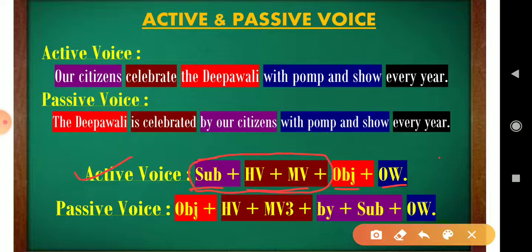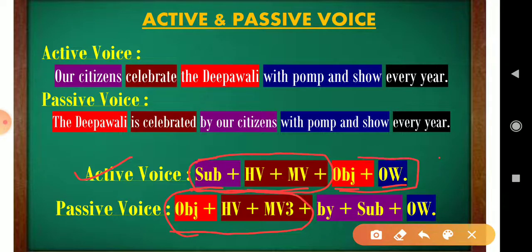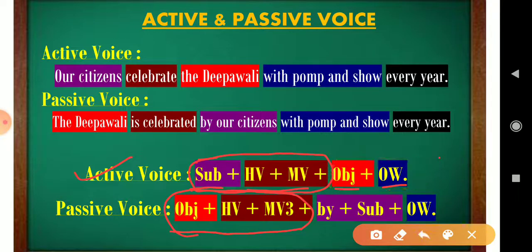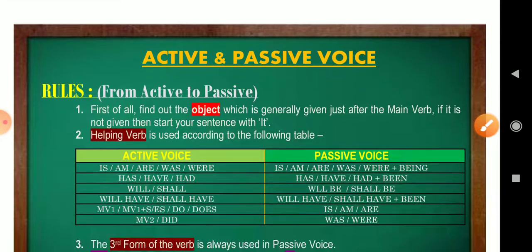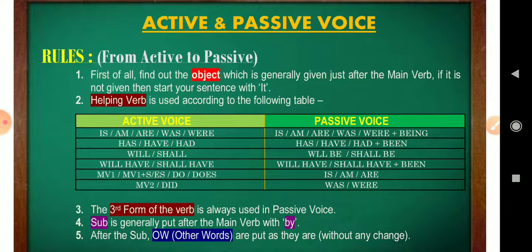If any sentence has a subject, helping verb, main verb, and object, that is a complete active voice sentence. In passive voice, you will find: Object + Helping Verb + Main Verb (third form) + by + Subject + Other Words. These other things — 'by' plus subject and other words — may or may not always be present in the sentence. There are five basic rules to convert any sentence from active to passive.